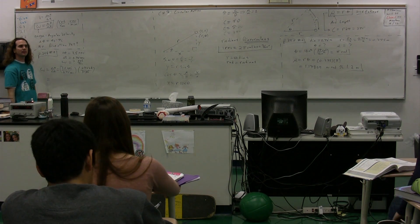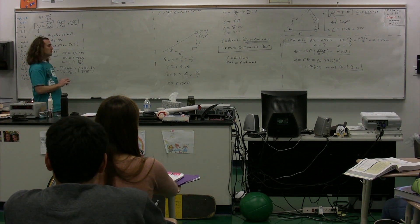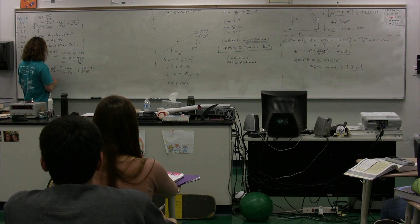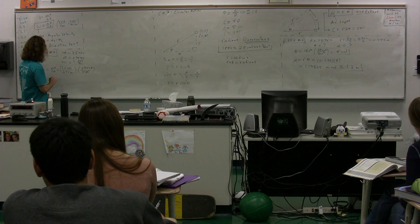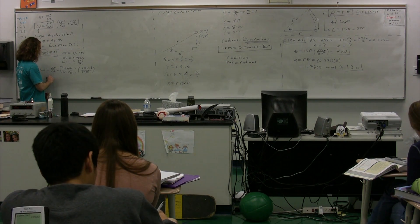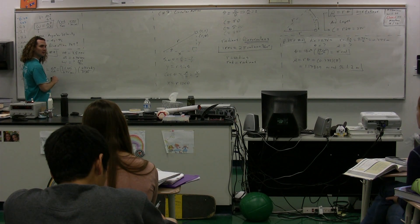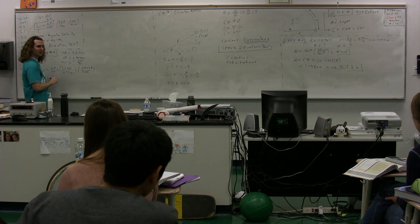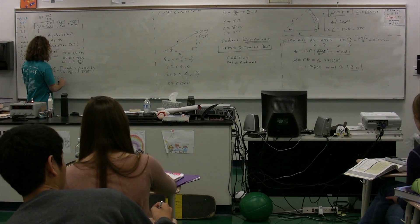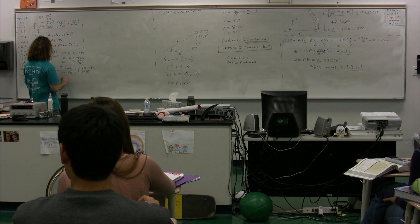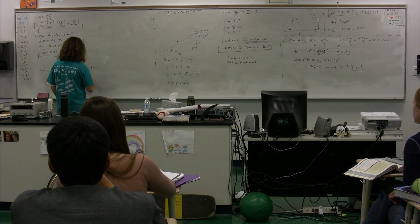What do we get? 3.5 times 2 pi divided by 0.75, please. Do I not have enough calculators up front? What'd you get? 29.32153. So we get 29 radians per second.